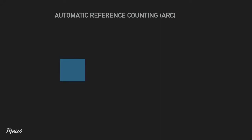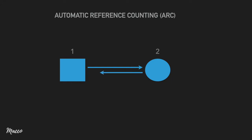Let's see how this works. Say we have a square object — whenever we create it the reference count is 1. Let's also create a circle object; the reference count is also 1. Now the square object references the circle object, so the count is incremented by 1 to 2. The same way, if the circle references the square, the count is incremented by 1 to 2. Now if we set the square to nil, the reference count is decremented by 1, but the system doesn't free up memory because the count is still 1. It only frees memory when the count reaches 0 — hence a retain cycle.